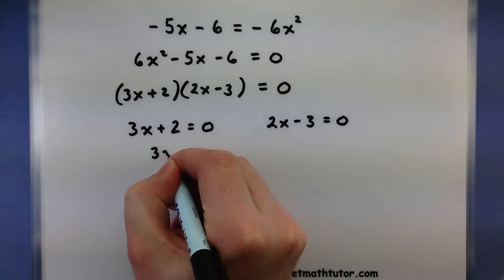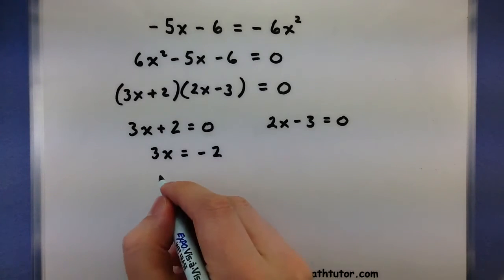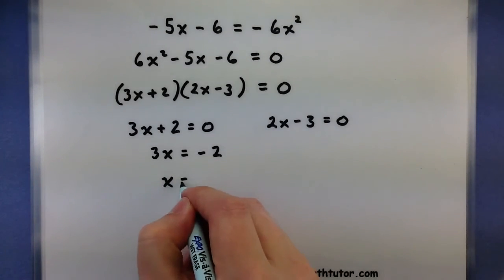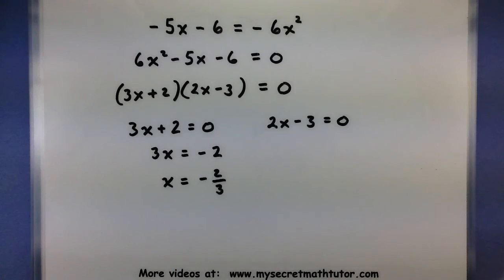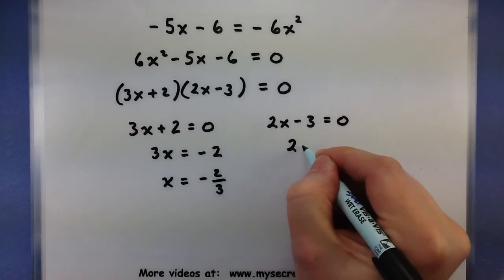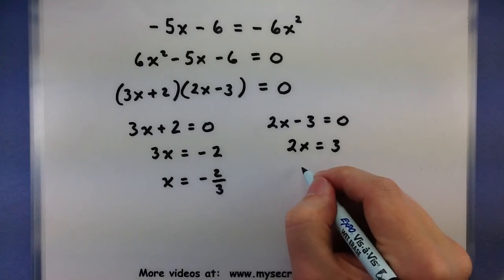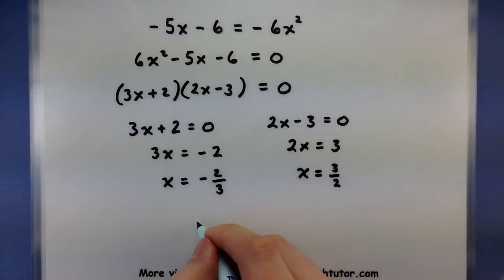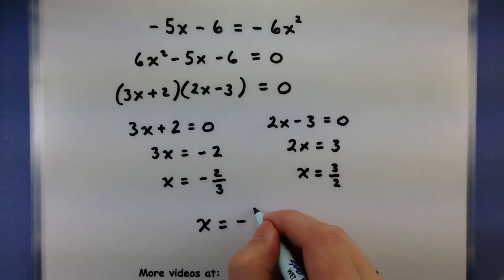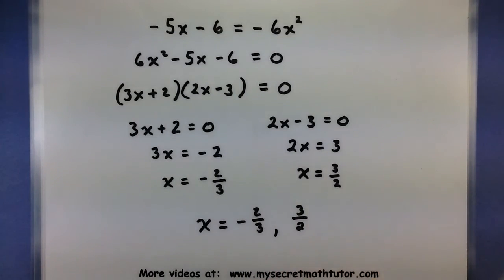So starting on the left, I will subtract a 2 from both sides. Looks good. And now I will divide by 3. All right. There's one solution. For this one, I will add 3 to both sides and then divide by 2. So for this one, my two solutions are a negative 2 thirds and a 3 halves. Awesome.